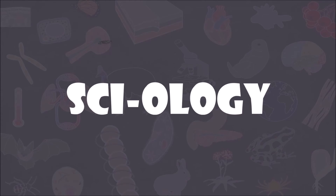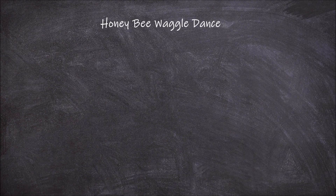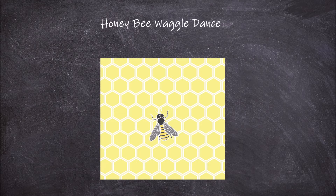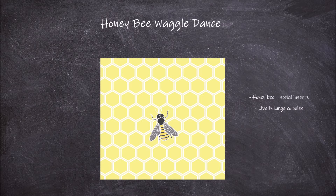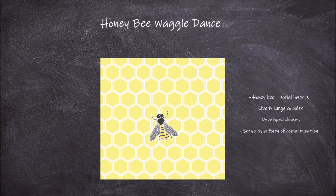Welcome back to my channel. In this video we are going to go over the waggle dance of the honeybee. Honeybees are social insects that live in large colonies. They have developed dances to let other bees about to leave the hive to go forage know where they got their yield from. These dances serve as an important form of communication between bees in a hive.